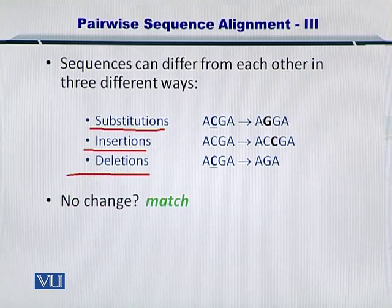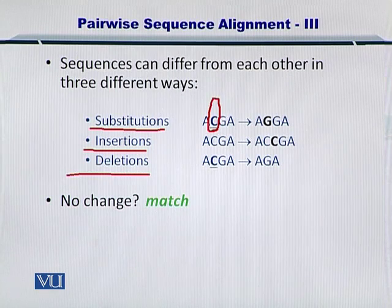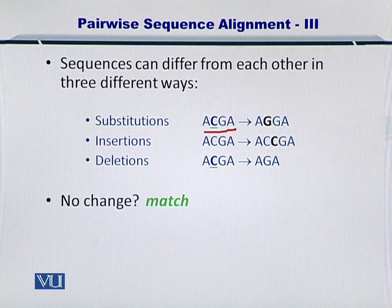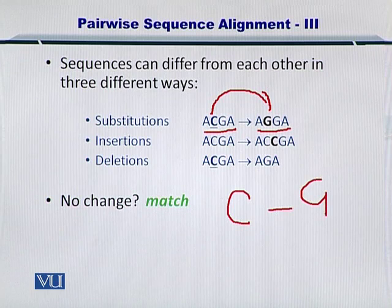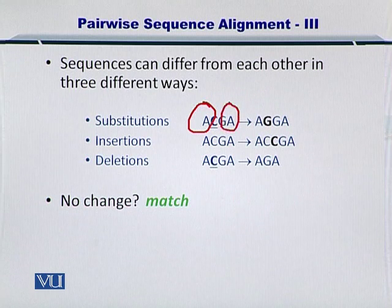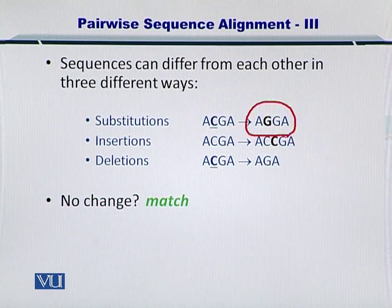If there are substitutions, then essentially, as you can see here, C has been replaced by a G. So the sequence ACGA has become AGGA. This substitution is actually a mismatch because C does not match G. The rest of the three nucleotides — A, G, A — are matching very nicely. So there is only one difference between these two sequences, and this difference is classified as a substitution.